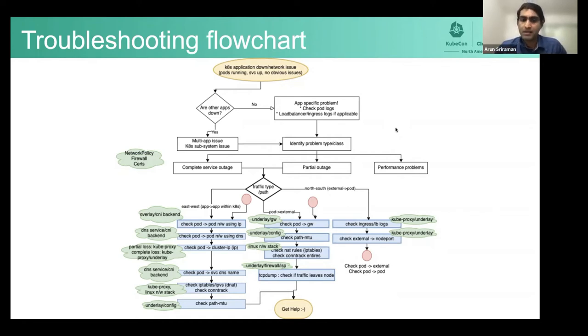In case of both partial and complete outage, what we do next is to see what type of traffic path the problem lies on. And here again, we classify into three things. One is east-west and what I mean by east-west is applications within the Kubernetes cluster talking to each other. Somewhere there's a problem there and that's normally through a Kubernetes service.